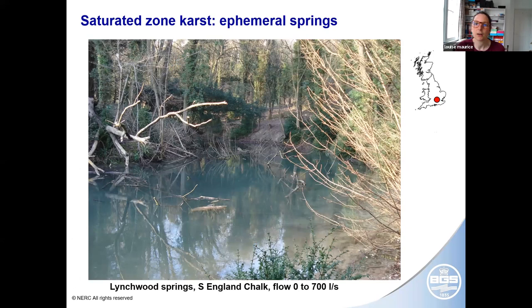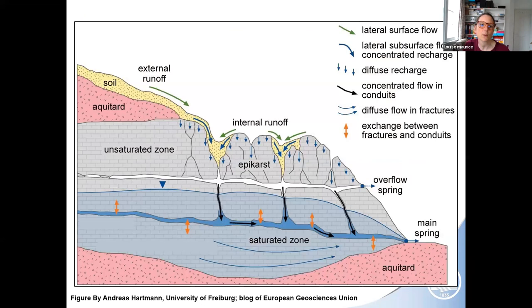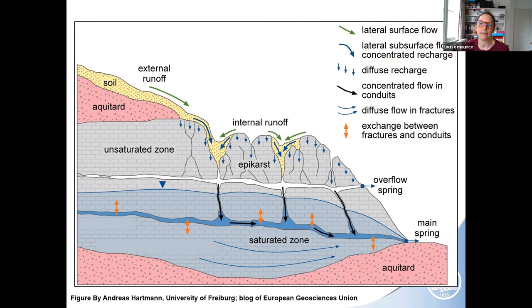Springs can have characteristics indicative of karst — some are ephemeral and suddenly reactivate. This chalk spring near Lambourne in Berkshire has the river dry for several kilometres downstream when not active, then it suddenly starts flowing and can reach seasonal flows up to 700 litres a second. This type of spring migration is very typical of karst, nicely illustrated in a conceptual figure by Andreas Hartmann: the main spring is fed by the karstic conduit network, but under high flow conditions the conduit system capacity is exceeded and water discharges at an overflow spring higher up. This mechanism is also a common cause of groundwater flooding in karst aquifers, which we do see a lot of in the chalk.